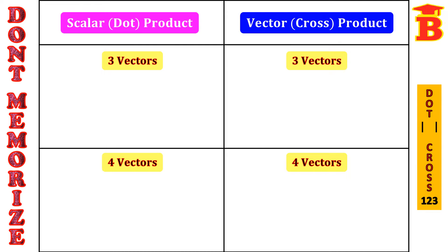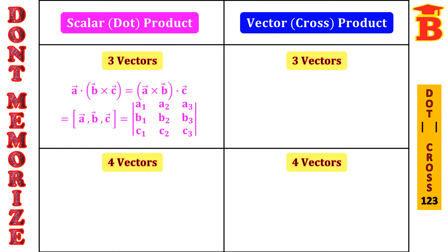First let us see the 3 vectors dot product formula. Here there are 3 vectors: A vector, B vector, C vector. If we have one dot and one cross, then it is called scalar product of 3 vectors. We have the bracket only for the cross product, so A is a vector, B cross C is a vector, and we take dot product of these two.